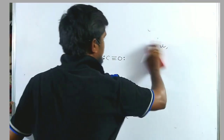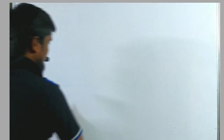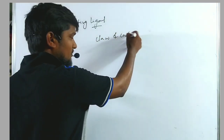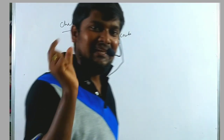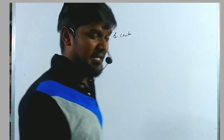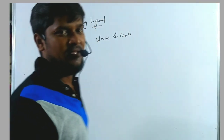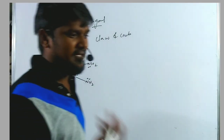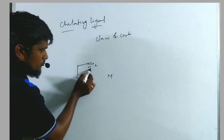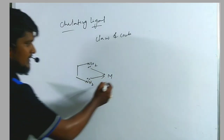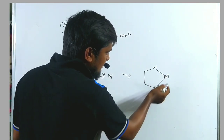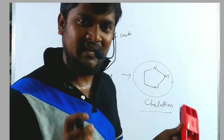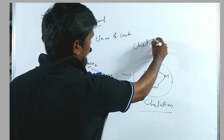The final one is chelating ligands. Chelation comes from the claw of a crab. Chelation means a single ligand which forms a ring with the metal atom. For example, ethylene diamine has two nitrogen atoms, each with lone pairs. Those two lone pairs coordinate with the metal atom, forming a ring — this formation of a ring is called chelation. Other than monodentate ligands, all bi-, tri-, tetra-, penta-, and hexadentate ligands are chelating ligands.